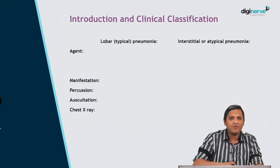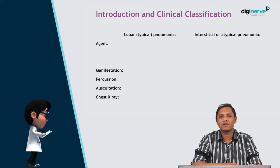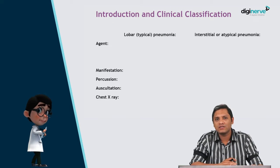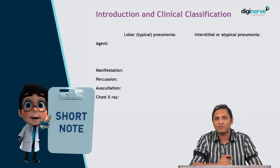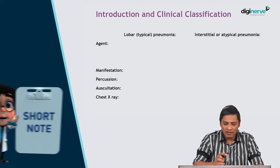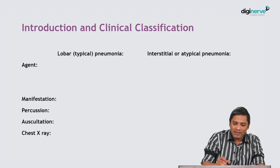Before we start into the topic per se, we will have an introductory session where we will discuss the differentiating features between lobar pneumonia and atypical pneumonia. Pneumonia can be clinically classified into lobar or typical and interstitial or atypical pneumonia.